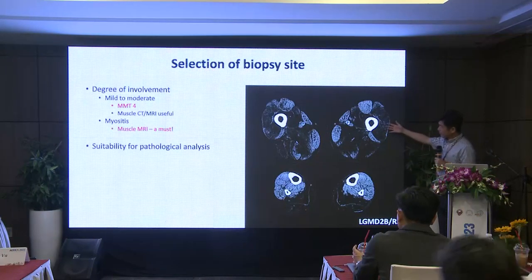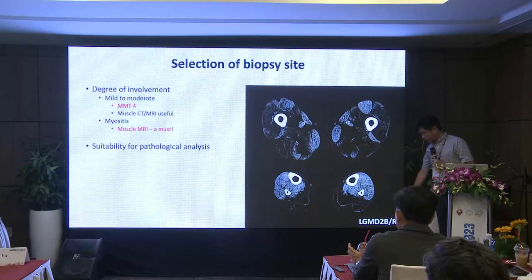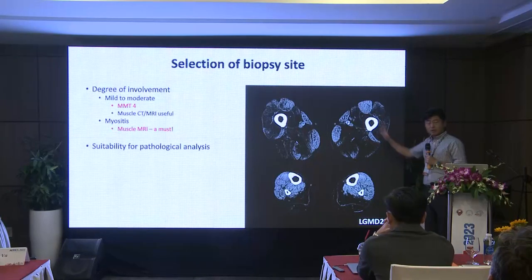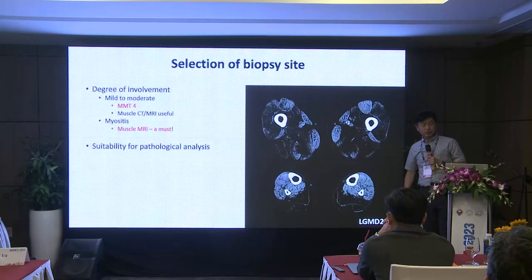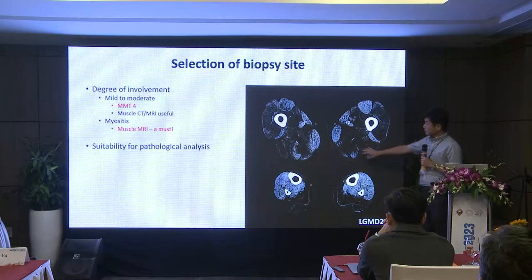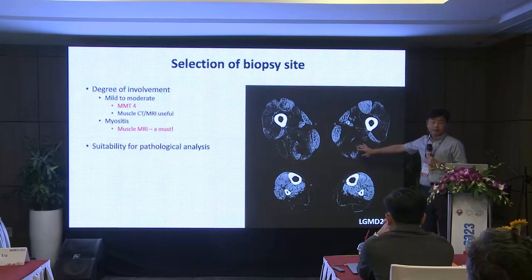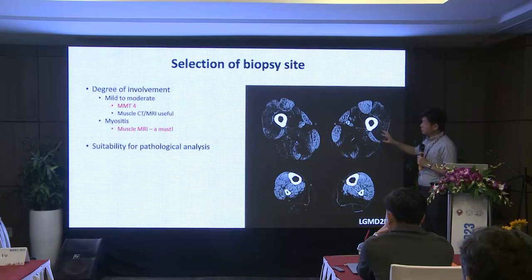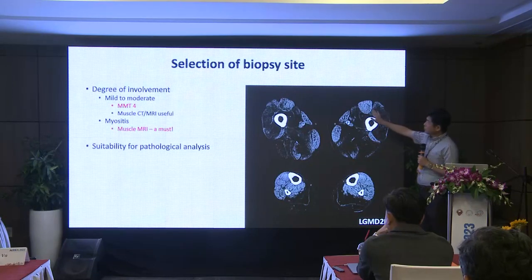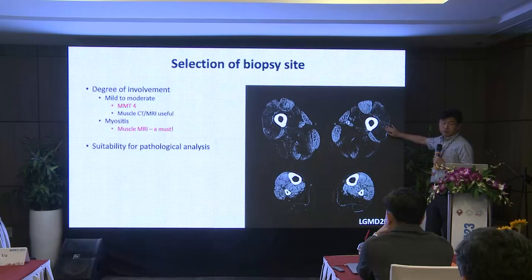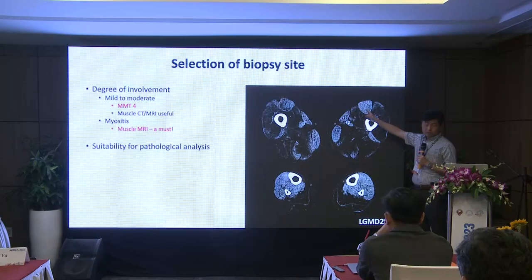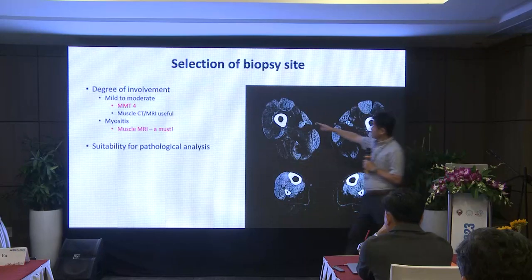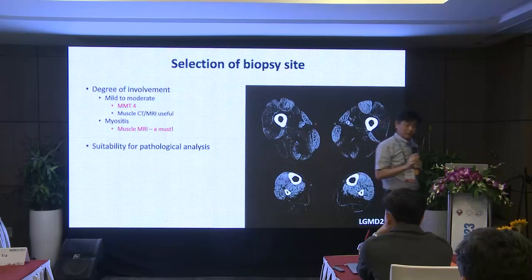This is a muscle CT at thigh level and calf muscle level from a patient with limb-girdle muscular disorder. Look at this thigh muscle — not all thigh muscles are equally affected. It means that proximal muscle weakness is not enough to guide biopsy site; even proximal muscles are very differently or selectively involved. Some muscles look really normal, but others are almost completely replaced by fat — so you should not biopsy those severely affected ones, and instead choose a mildly involved muscle.